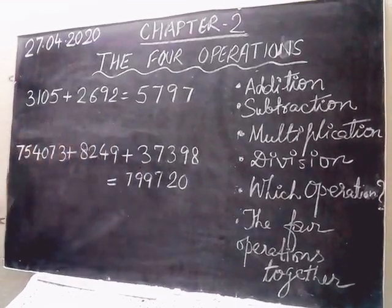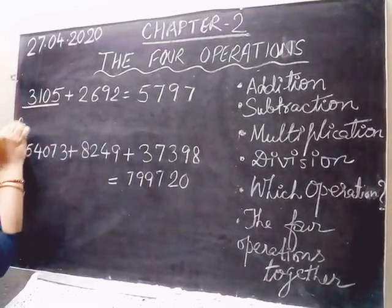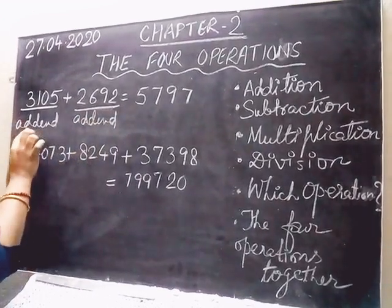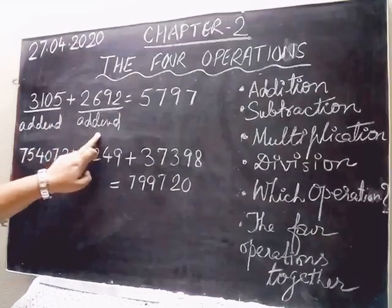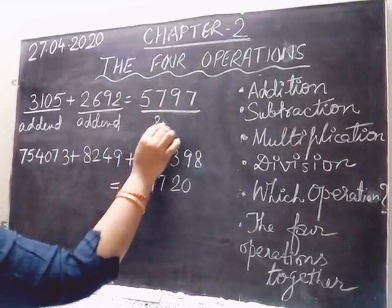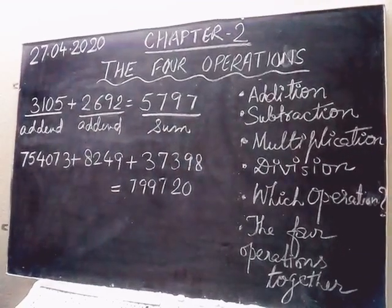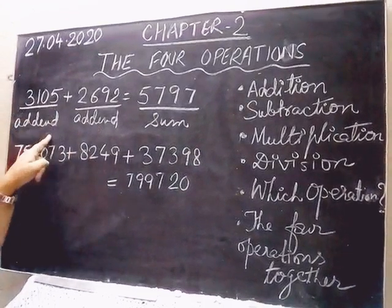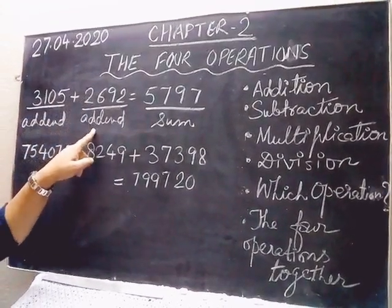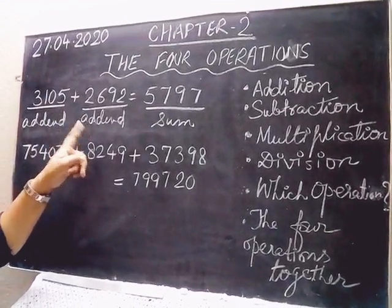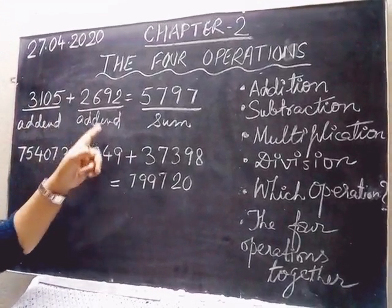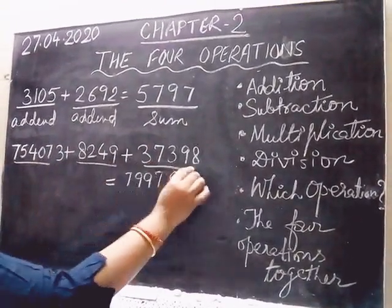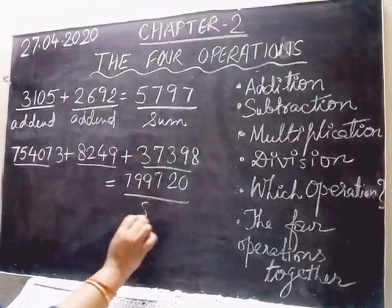The numbers which are added are called addends. This is also an addend. Together in plural they are called addends. The answer you get after adding is called the sum. You need to remember this — you can get it in MCQs or fill in the blanks. Numbers which are added are called addends, and the answer after addition is called the sum.